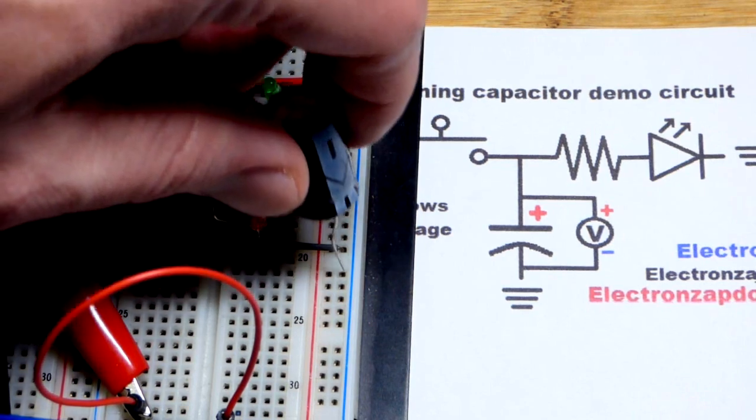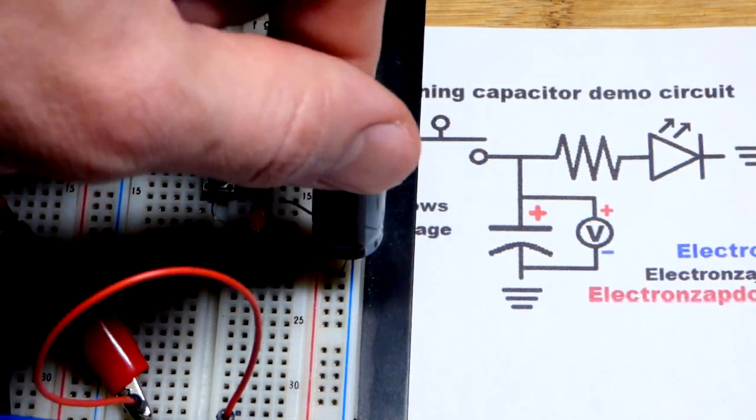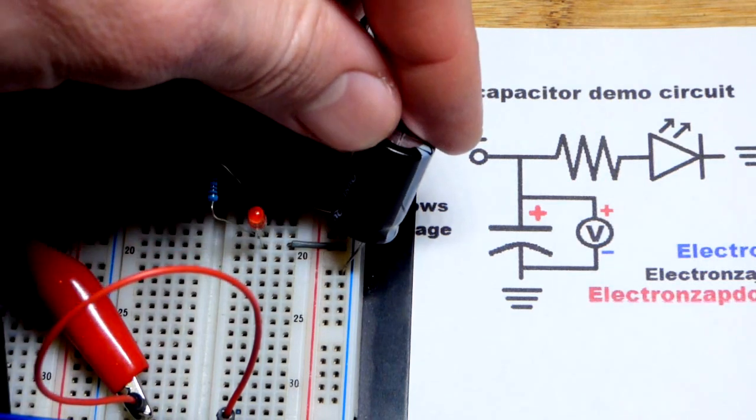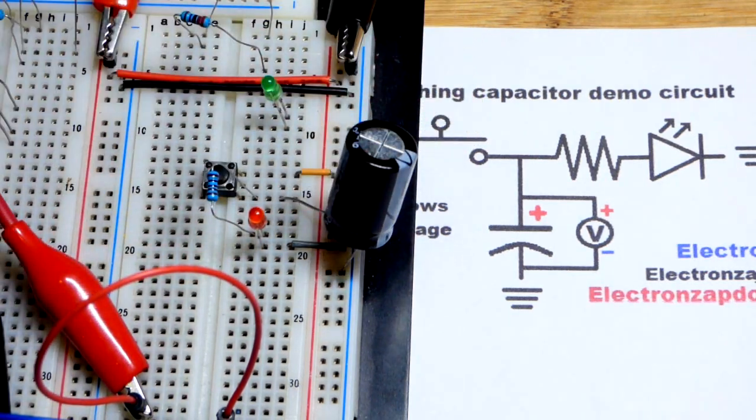There's also super capacitors. You won't want to use one of them in this circuit unless they limit current. I do have super capacitors that do, but a lot of them don't limit current and you'd have high current, so you got to be careful. But in any case, there we go.